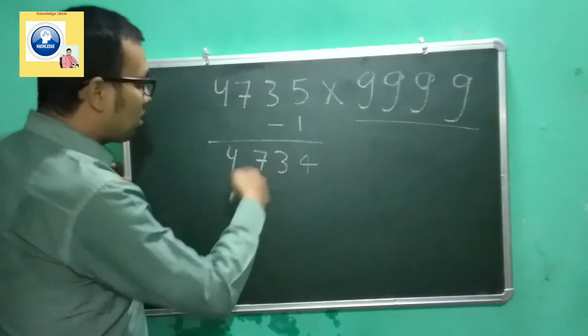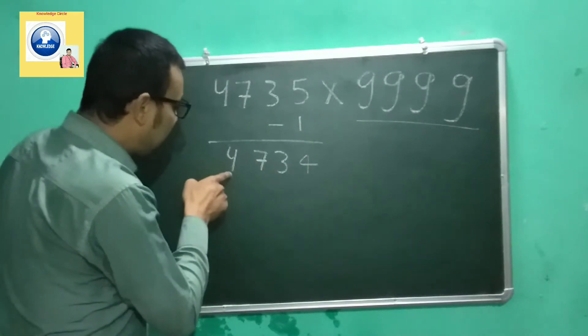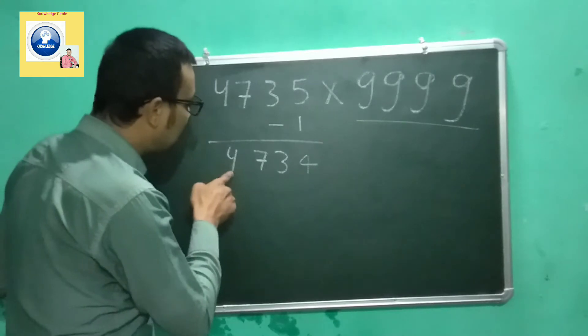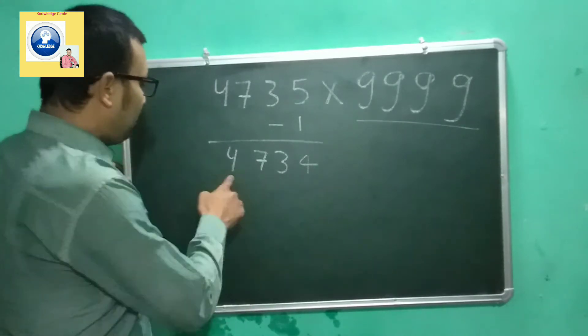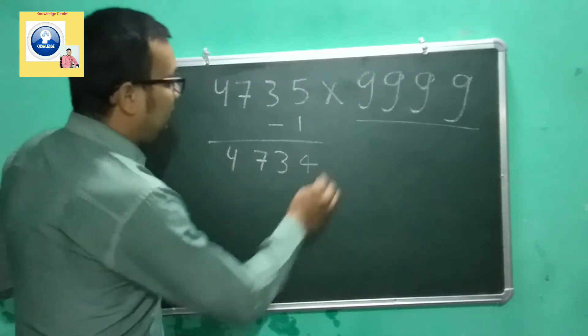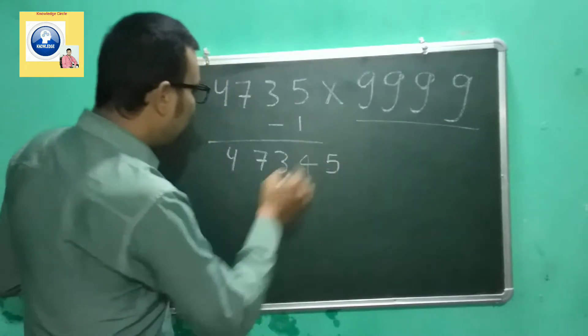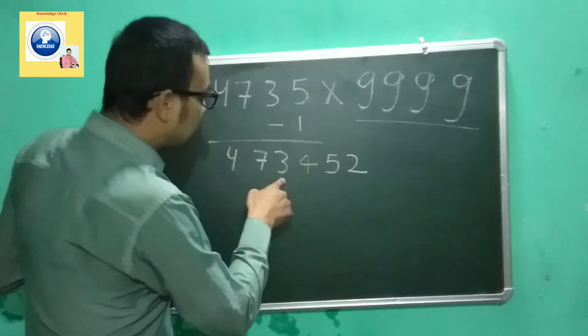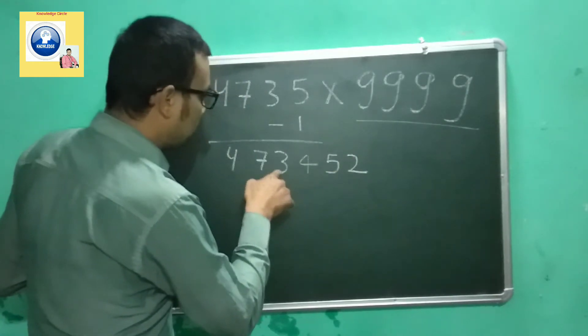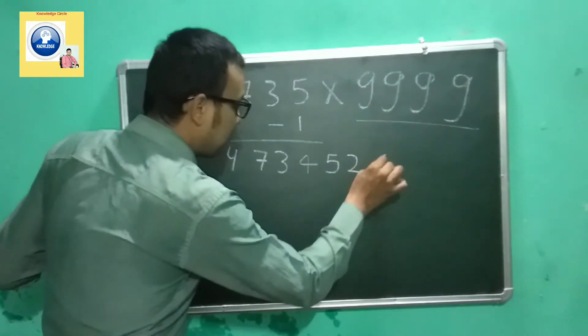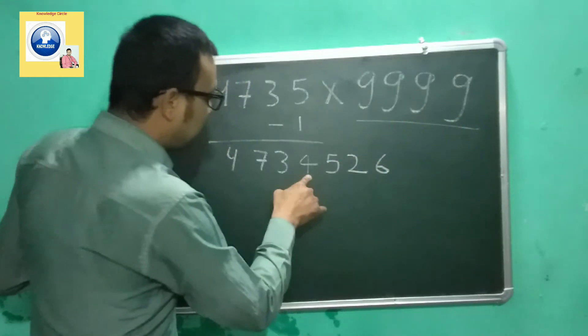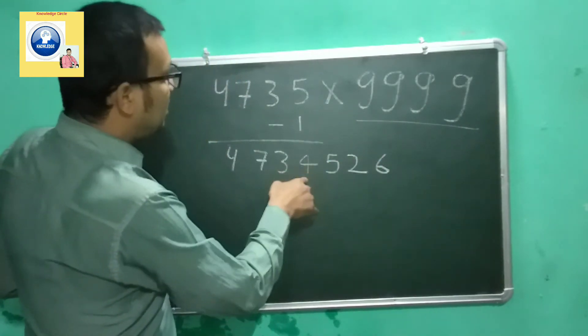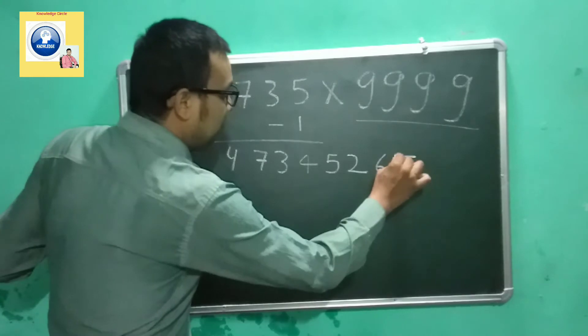Now we have to multiply by 9999. What we're going to do is find how much each digit is lesser than 9. It is lesser than 9 by 5, so we write 5. It is lesser than 9 by 2, so we write 2. It is lesser than 9 by 6, because 6 plus 3 equals 9, so we write 6. And the last one is lesser than 9 by 5.